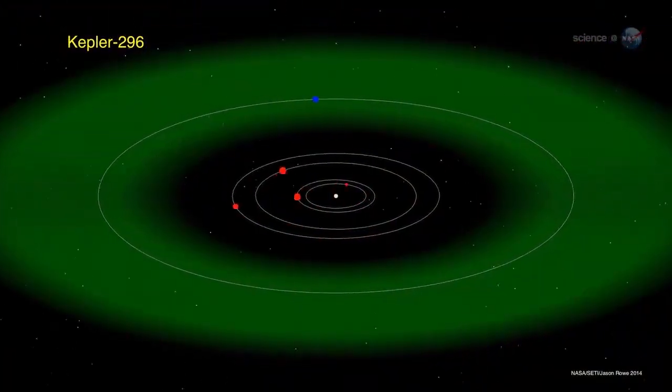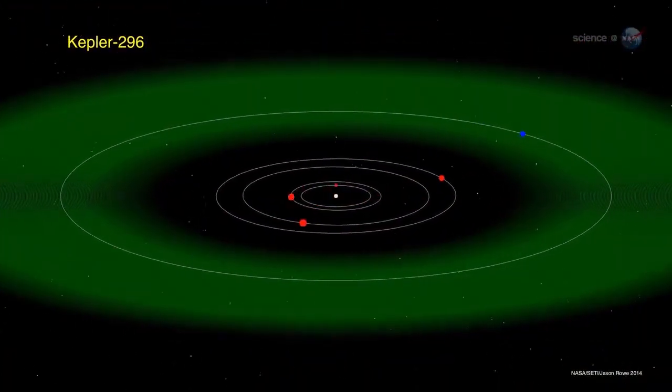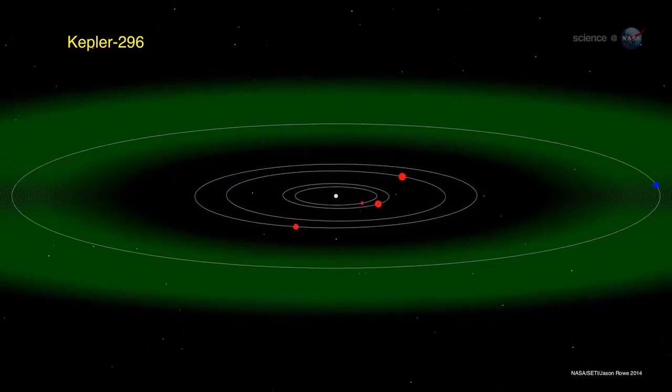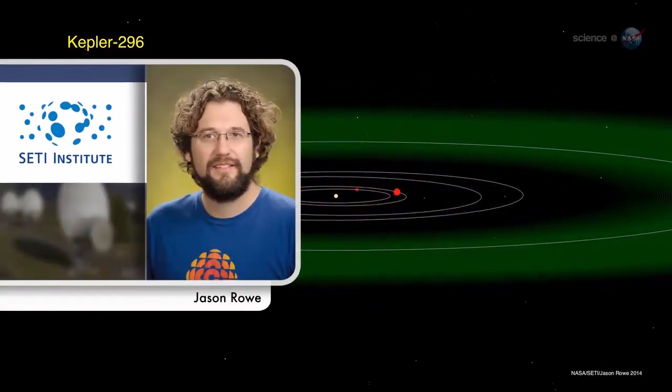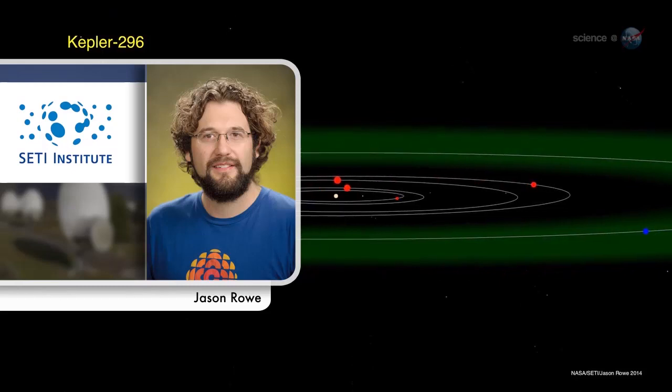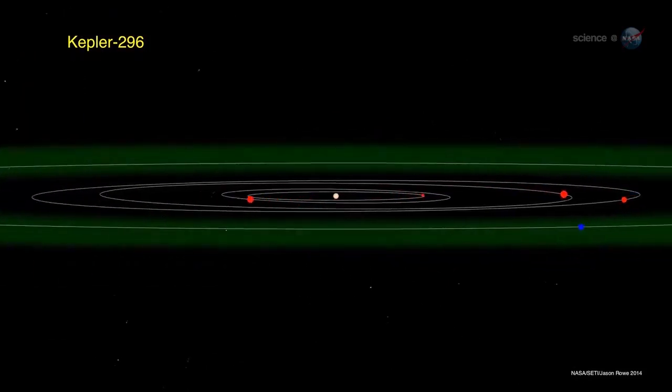This study shows us that planets in multi-systems tend to be small and their orbits are flat and circular, much like the inner parts of our own solar system, says Jason Rowe, a co-leader of the research at the SETI Institute.